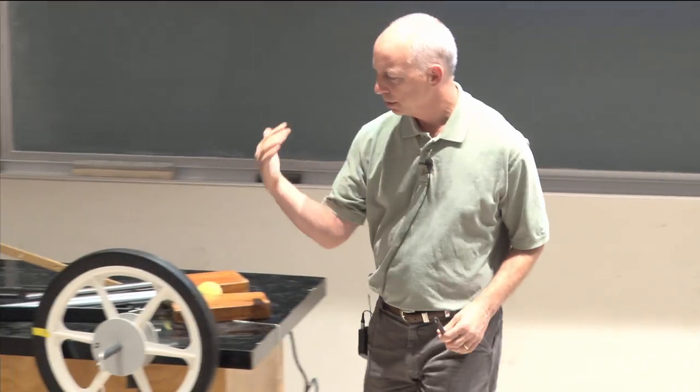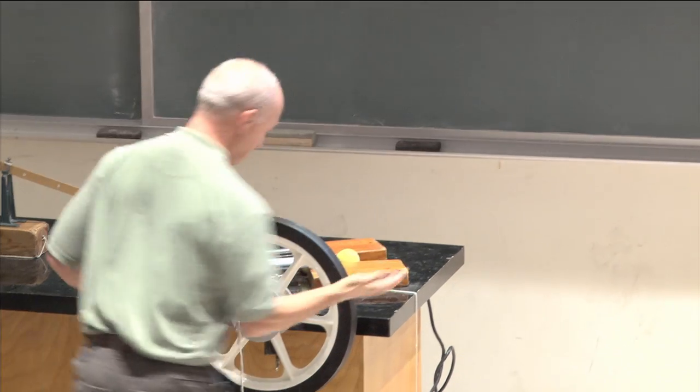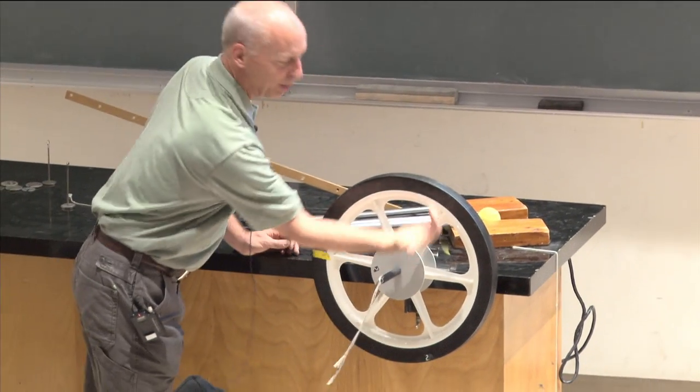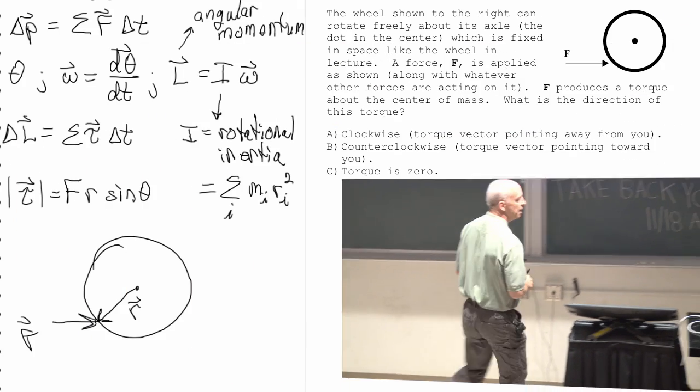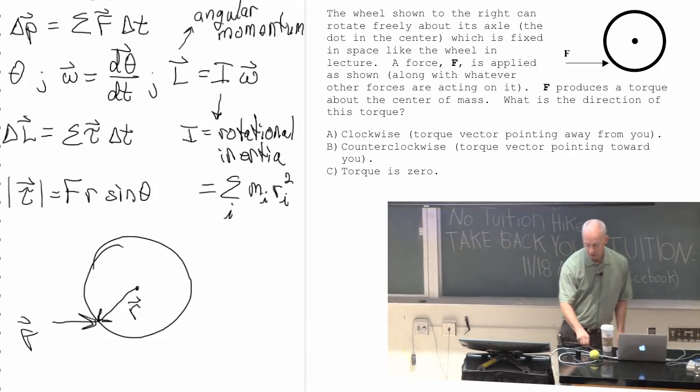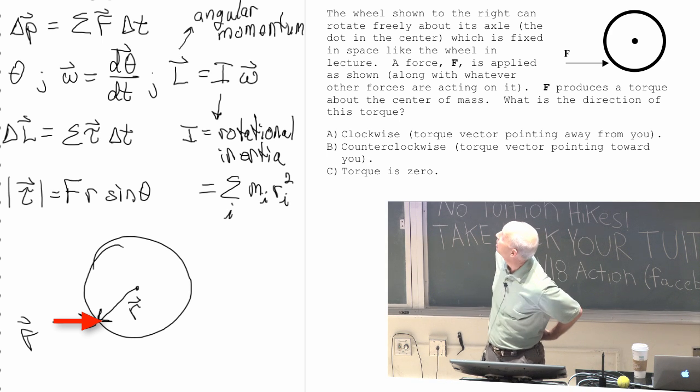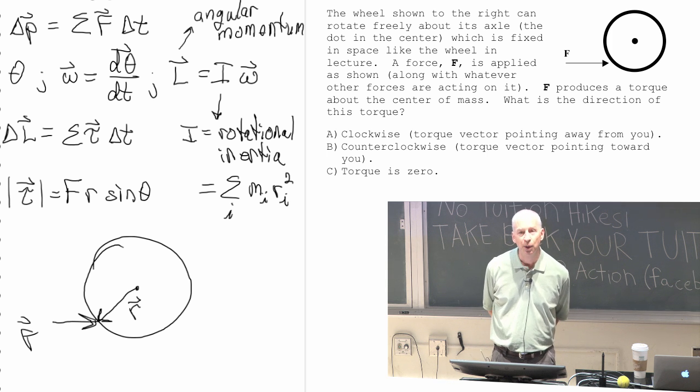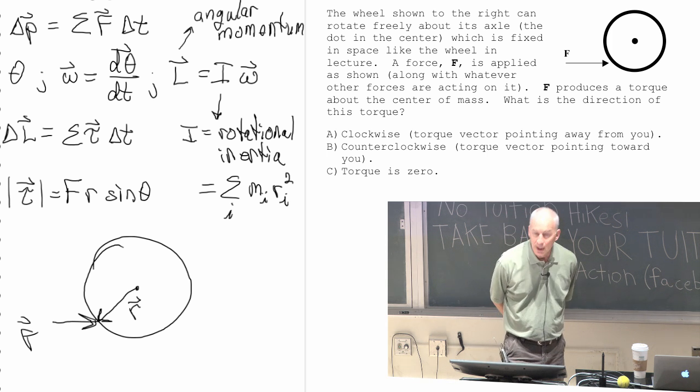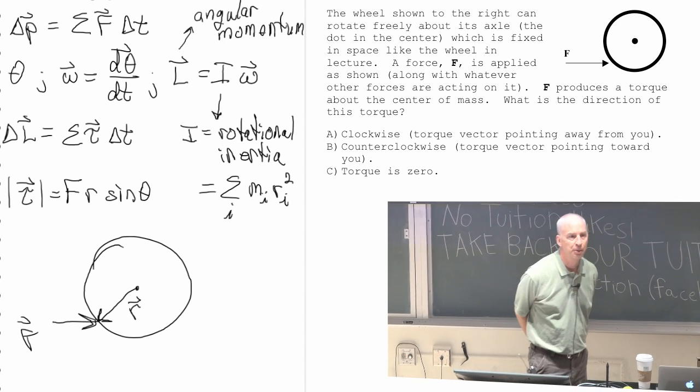Counterclockwise, by the way, by your right-hand rule. Counterclockwise would be pointing—a vector pointing toward you. So that's a torque vector. The force points to the right. And the torque vector due to that force points toward you. It points out of the screen toward you, by the right-hand rule.